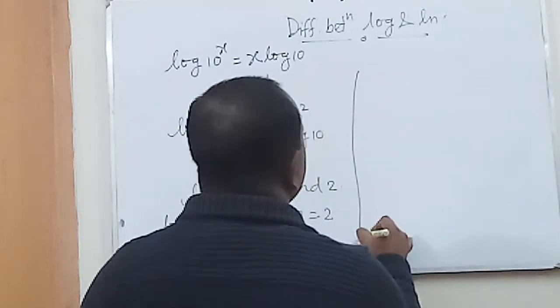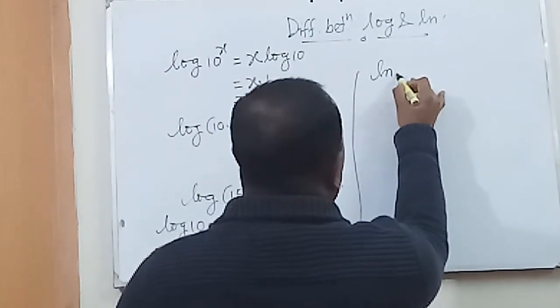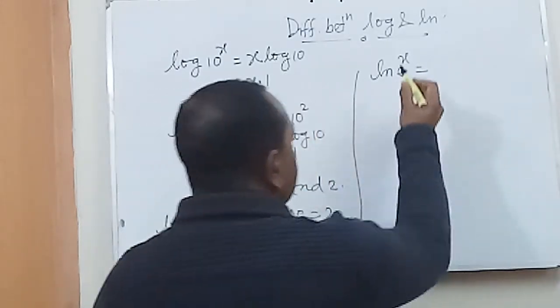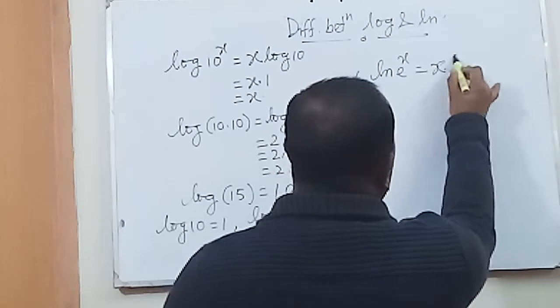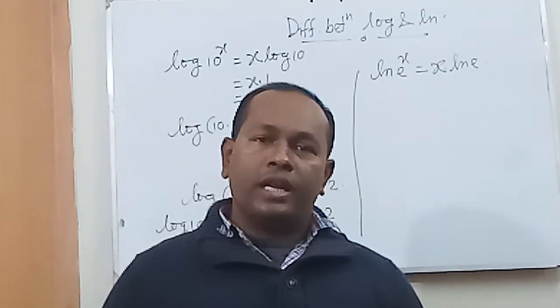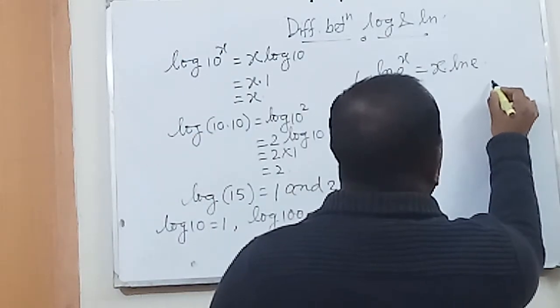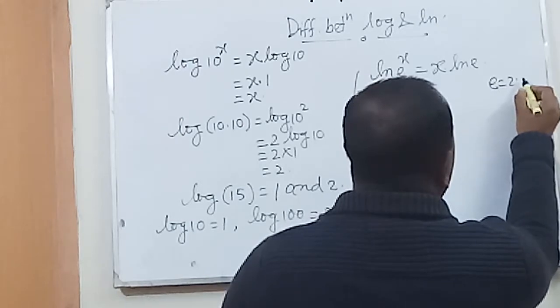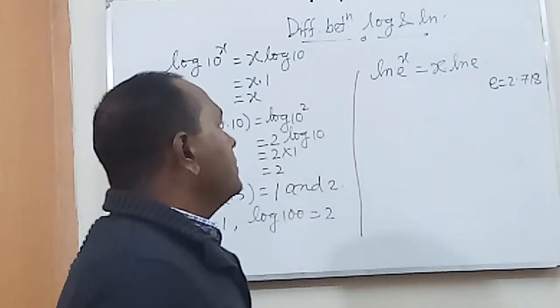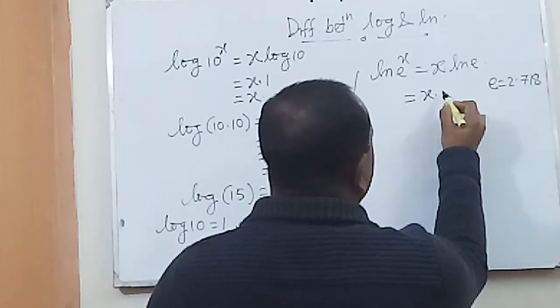Let's consider log e to the power x equals 1. This can be written as x log e equals 1. Here e is an irrational number and its value is 2.718 approximately. So the value of log e is equals to 1.